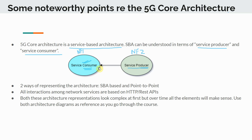You will see the terms consumer and producer referred to quite extensively in literature. There are two ways of representing the architecture: the SBA service-based architecture and the point-to-point interface based. They are essentially the same thing, just two different ways of looking at the architecture. All interactions among network services are based on HTTP RESTful APIs.